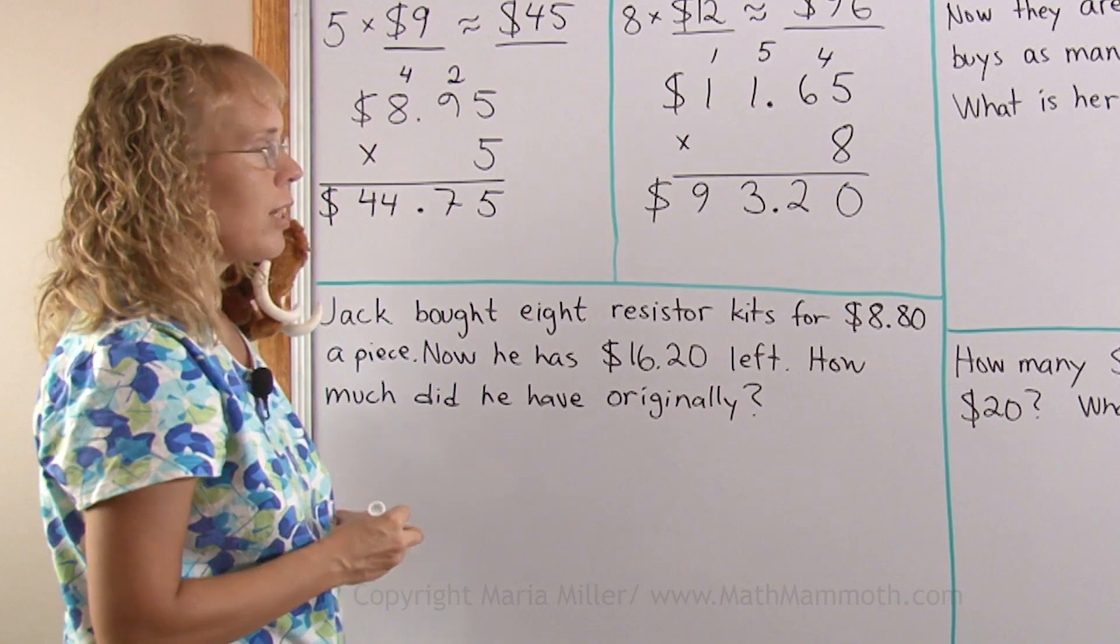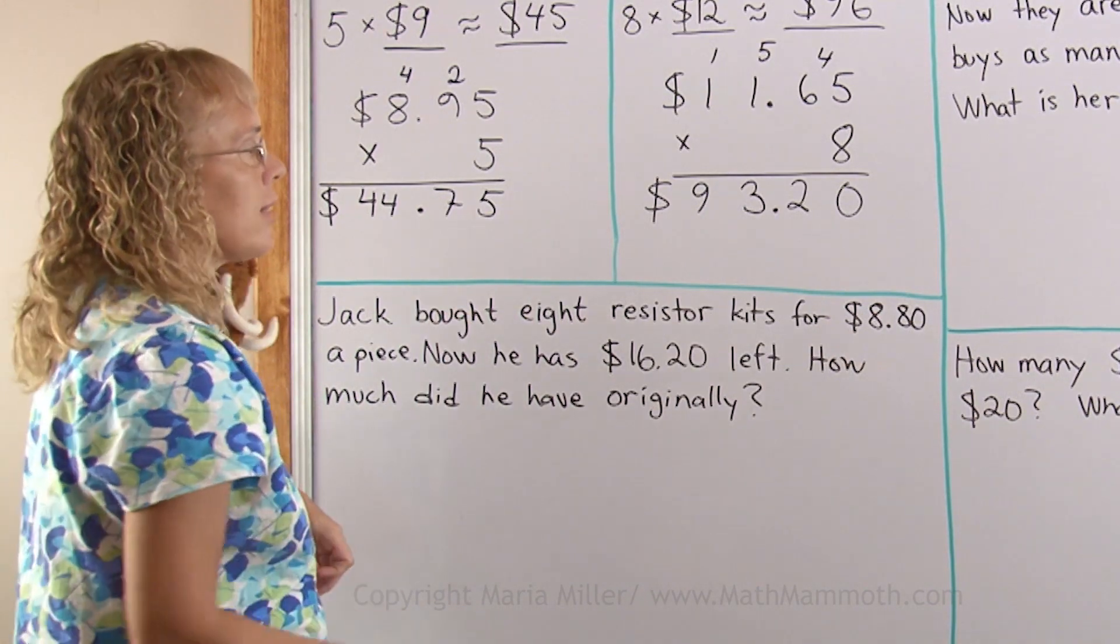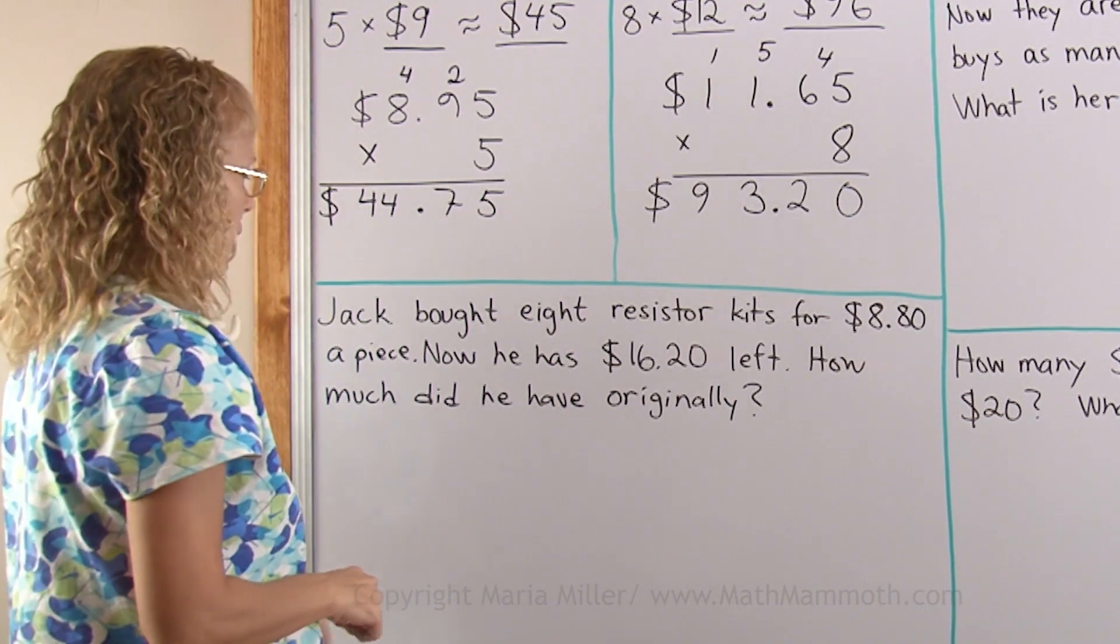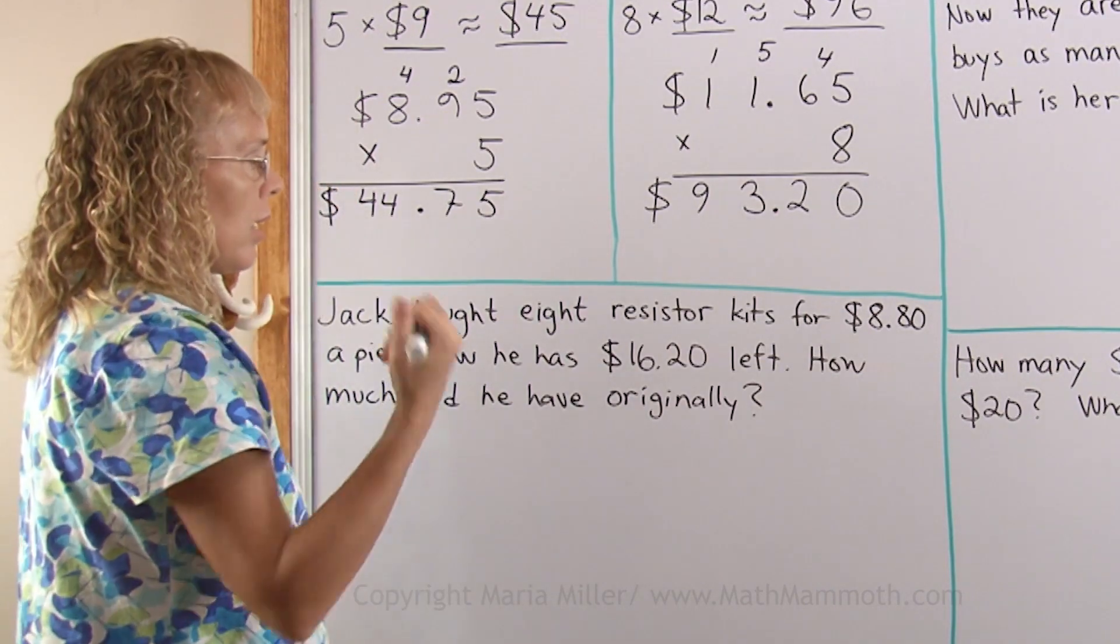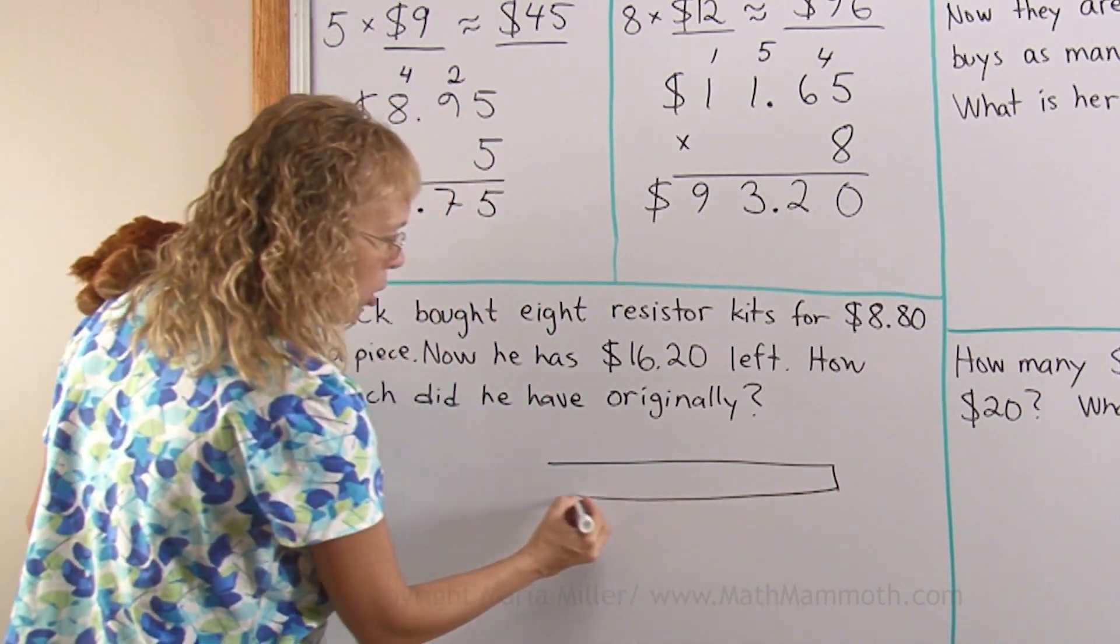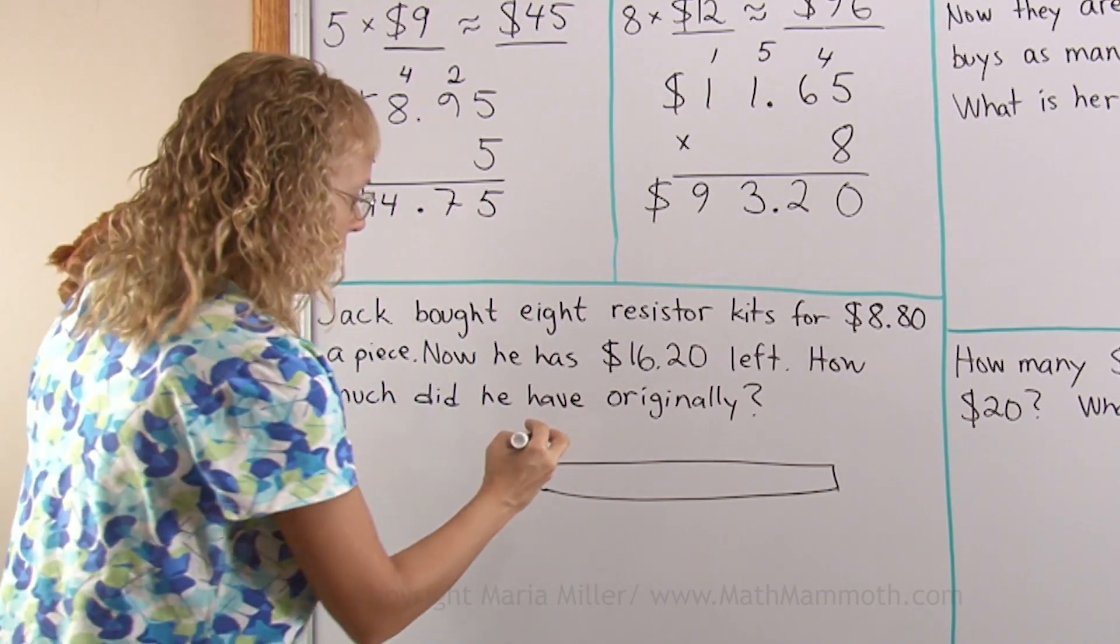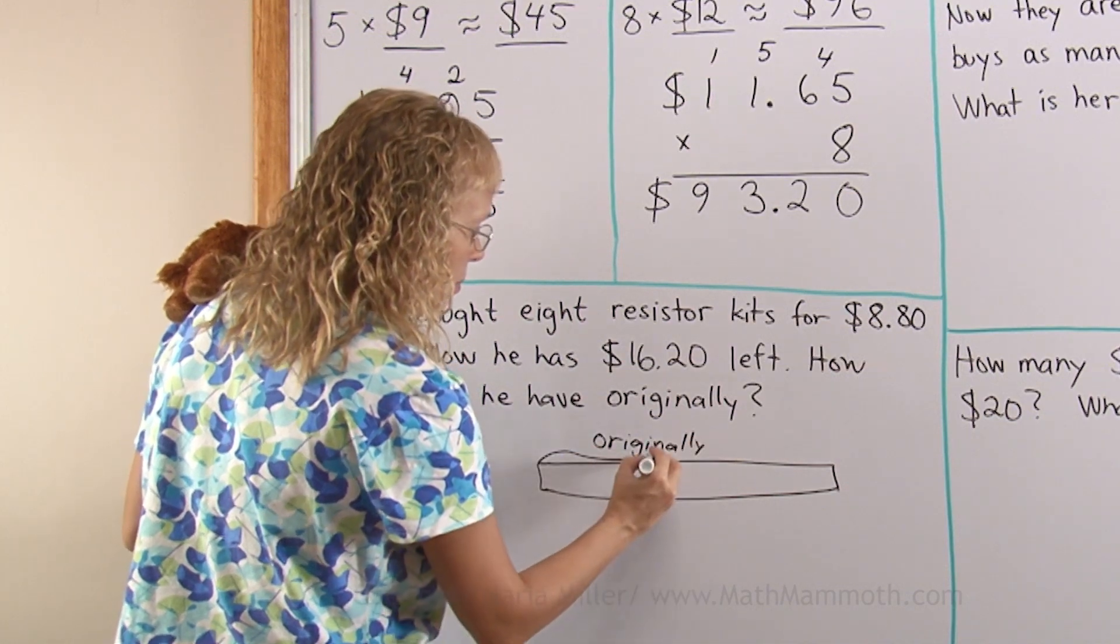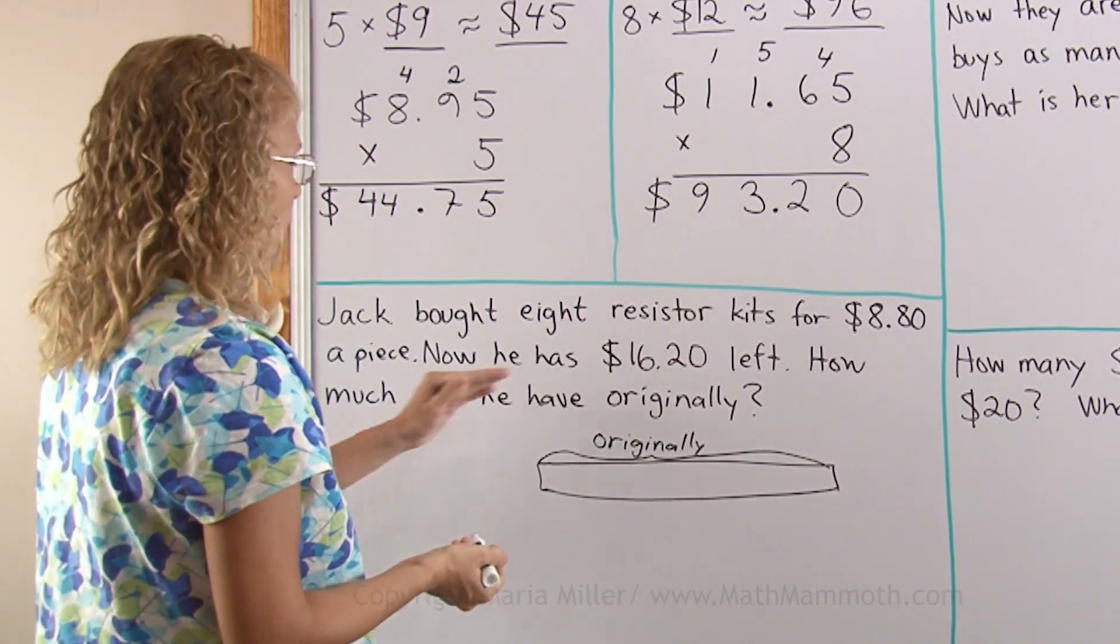Ok, let's solve now some word problems that involve money and multiplication. Jack bought 8 resistor kits for $8.80 apiece and now he has $16.20 left. How much did he have originally? I'm going to now draw here a bar diagram and for the bar diagram I will draw a bar that represents the total in the problem. And in this problem the total is what Jack had originally. All of this is what he had originally. He had a certain amount of total money.